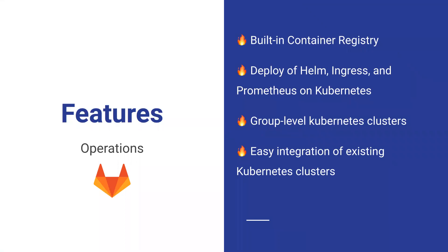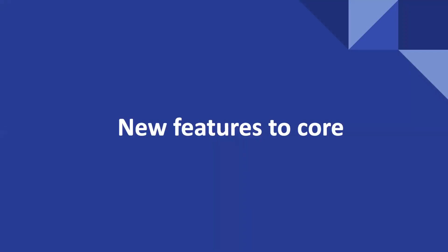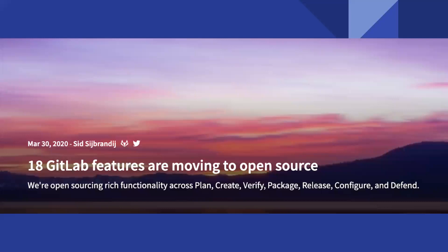That summarizes those six levels — and this is all available for free. There are way more free and paid features to explore. One more thing I wanted to mention: some features recently moved to the core. There's a big article from four weeks ago by Sid, co-creator of GitLab, mentioning that 18 GitLab features are moving to open source. They basically said: usually we don't move many features from enterprise to open source, but this time because of unprecedented times, we want to give a bit more to the community.